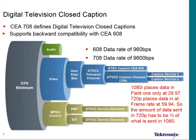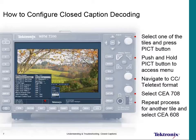The frame rate for 1080i is 29.97 frames per second, whereas for 720 captions it's 59.94 frames per second. So the amount of data we need to send in 720 to get the same throughput has to be half the amount sent in a 1080 payload. Since we're inserting at every frame, 1080 is going to have twice as much data sent every time we send a CDP — a caption data packet. That's where we get into really unique issues.